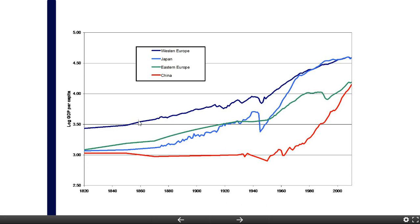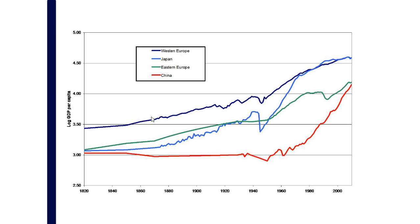I'm going to focus first on the Western European line, this dark blue line at the top. Western Europe has been growing pretty smoothly ever since the beginning of the Industrial Revolution. There is a major disruption for World War I, the Great Depression, and World War II. But if you connect the pre-1910 line with the post-1950 line, you would find an almost perfect linear trajectory of growth. A linear trajectory on a log scale is equivalent to a fixed percentage increase on a natural scale — Western Europe has grown slightly less than 2% per year for the last 150 to 200 years.